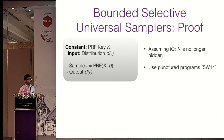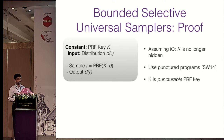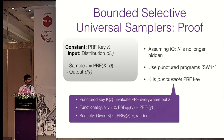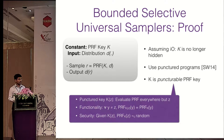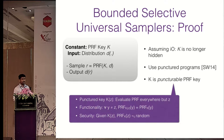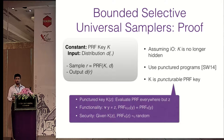However, we want to work with indistinguishability obfuscation (iO) rather than VBB obfuscation. Under iO we have no guarantee that K is hidden, so we need other techniques. We can use the punctured program technique introduced by Sahai and Waters. A puncturable PRF key allows you to puncture the key at a particular point Z. For every point outside Z, the new key behaves exactly like the old one. Given the original PRF output on the punctured point, it remains indistinguishable from random — so the punctured key reveals nothing about the output at that point.